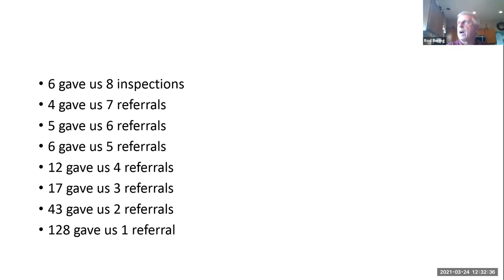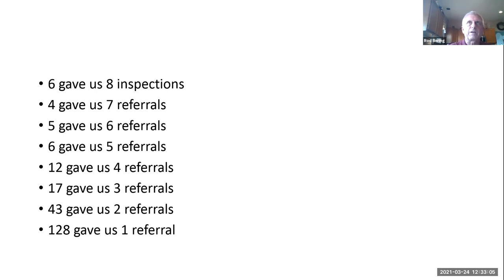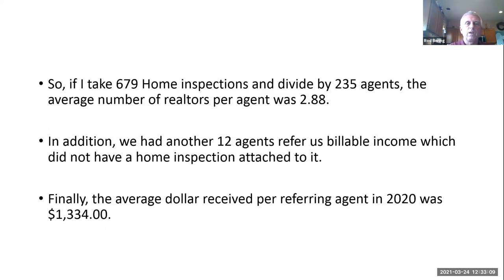And 128 were what we refer to as the one-hit wonders. I don't know if they're part-time realtors or agents with loyalty to another inspector whose inspector was busy and we picked up the scraps. I always tend to think these are more of the part-time agents that do this for hobby money because they're not committed to being a full-time realtor. We did 679 home inspections and divided that out by 235 agents — the average number of home inspections per agent was 2.88. As I said, the average you get per agent is two, and when I started tracking it, it really dawned on me: I had to expand our marketing base.